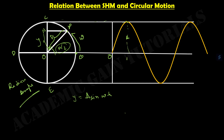When our theta equals pi by two and then becomes pi, it comes back to our B point but in the opposite direction. From one direction it was moving upwards, and from the other direction it is moving downwards. That's why from D to E, we see a downward curve.